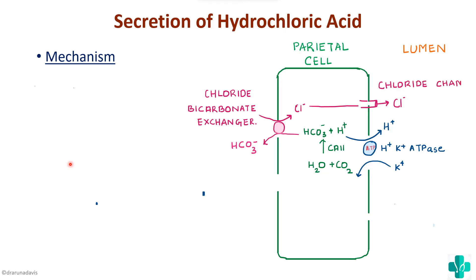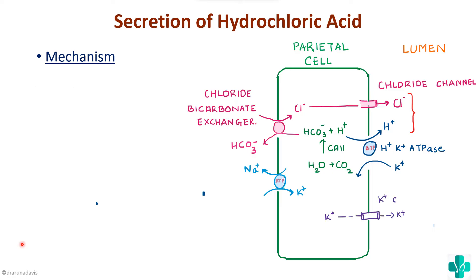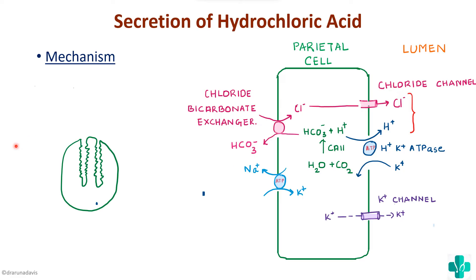The chloride that enters the cell moves out into the lumen through the chloride channel. Now we have both H+ and Cl- present in the lumen, forming HCL. On the parietal cell there is also a sodium-potassium ATPase pump needed for energy. Since potassium enters the cell in two ways, potassium channels are present to allow potassium to exit the cell, maintaining the amount of potassium needed for the H+/K+ ATPase pump to work. That is how HCL is produced.